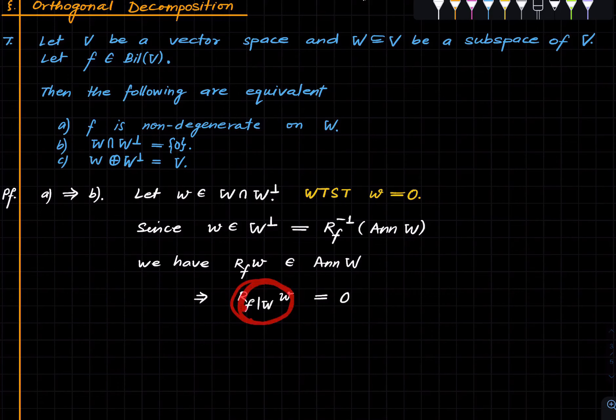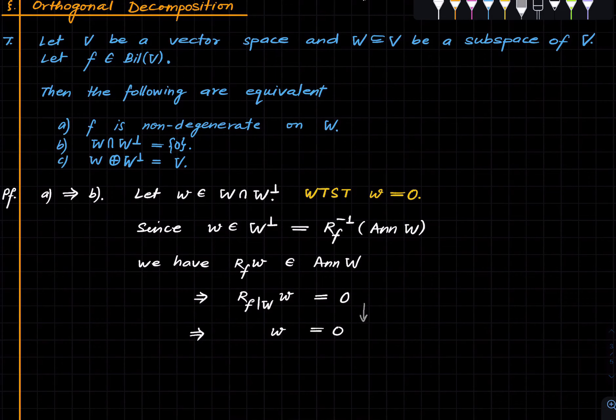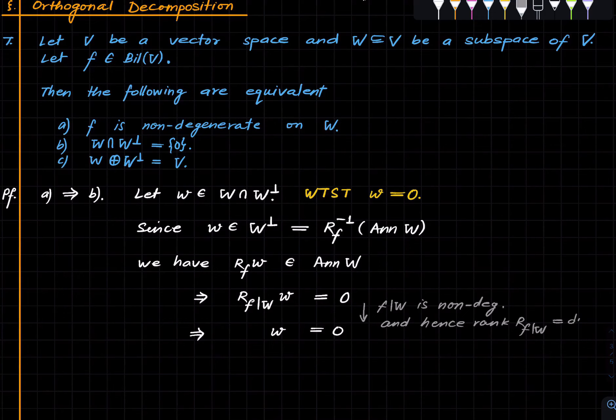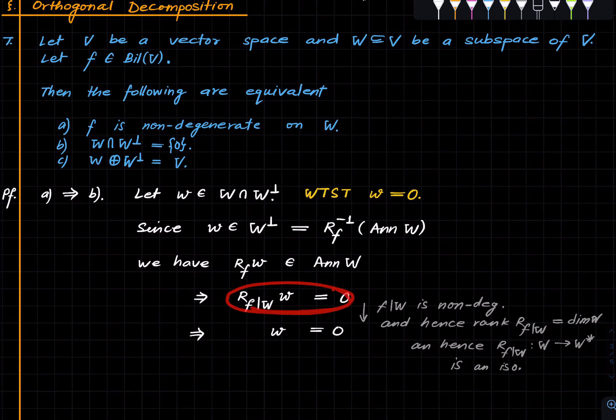This thing kills everything in W. Just realize this implies that. Since F is non-degenerate on W, this implies W is zero. Here what we're using is the hypothesis that F is non-degenerate, and hence rank of this guy is same as the dimension of W, and hence this is actually an isomorphism. So A implies B.